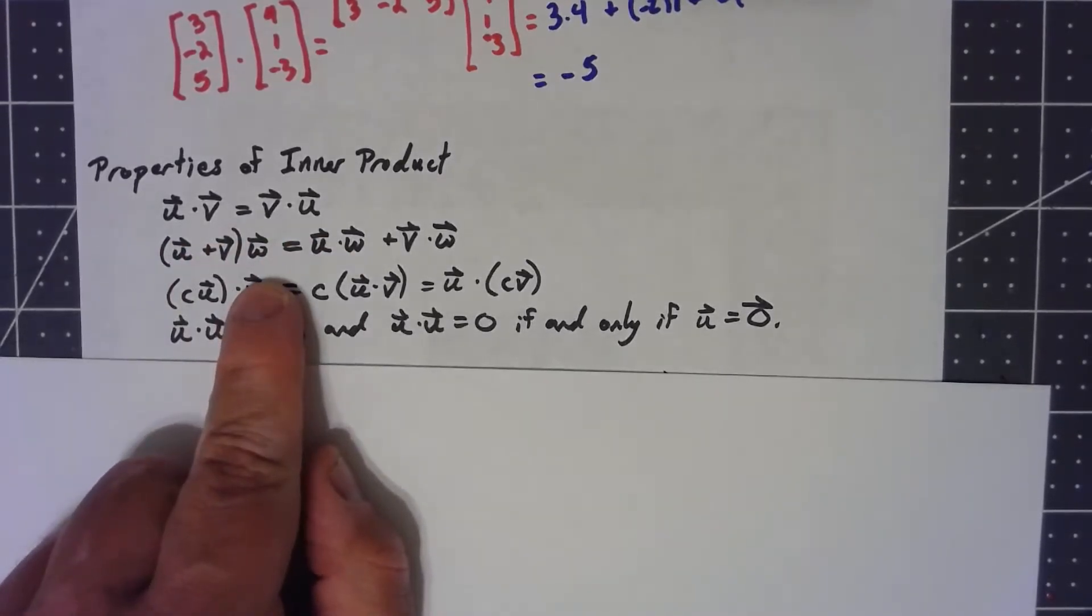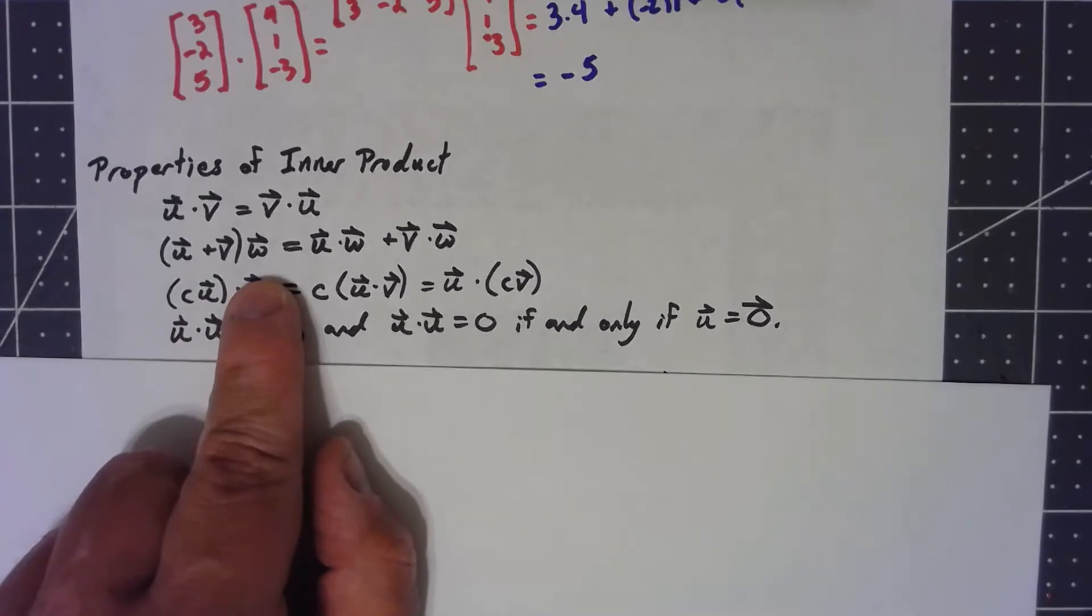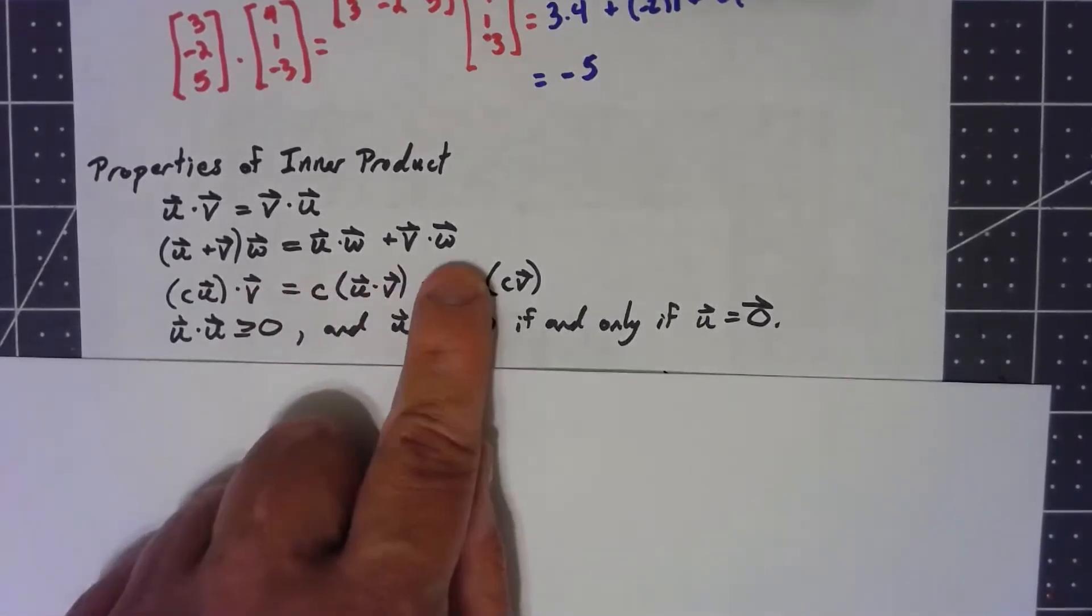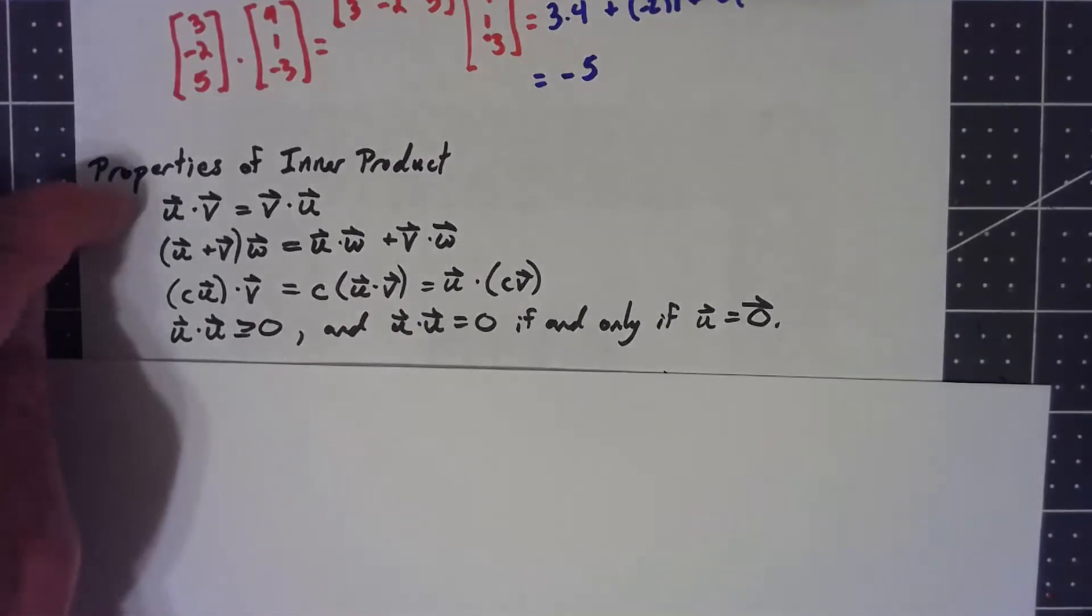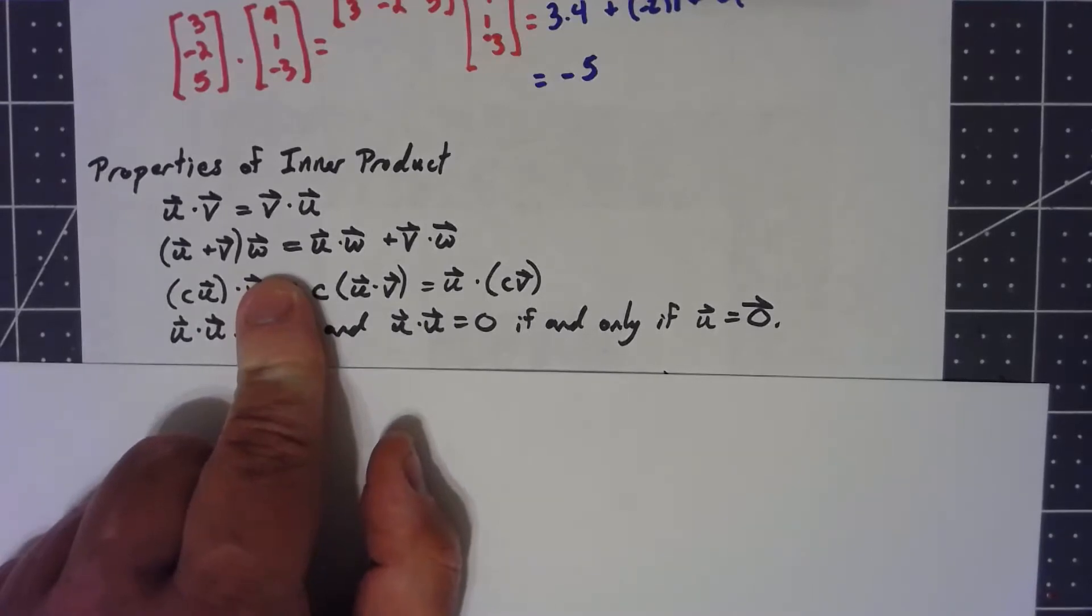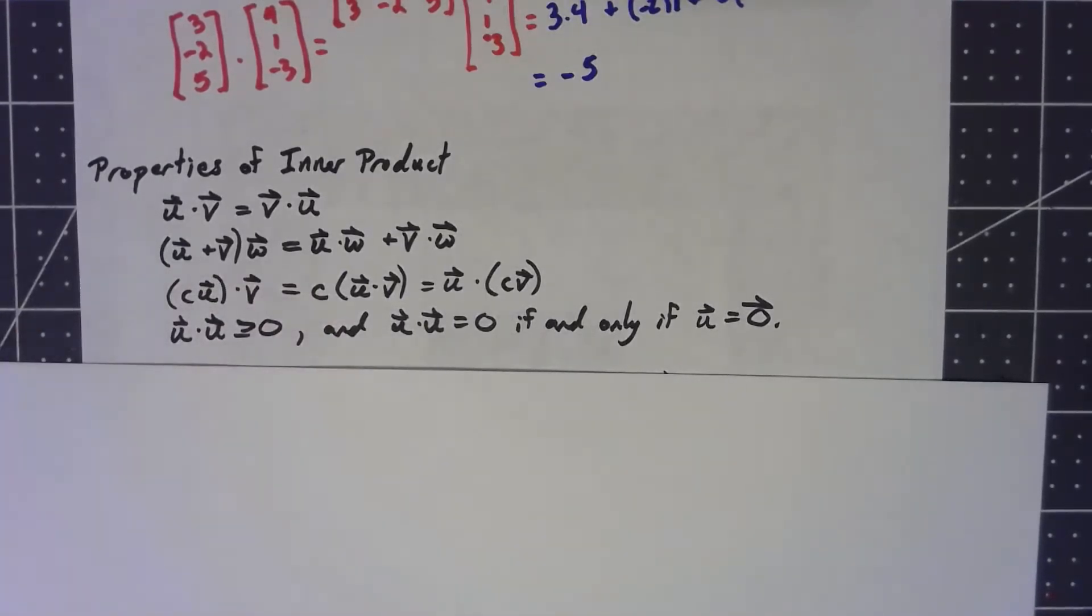It also needs to be distributive. So if I take the dot product of u plus v with a vector w, then it's the same as taking w dotted with each of the individual things. And putting that together with the first property, this would technically be a right distributive property, but because it's commutative, a left distributive property would work as well.